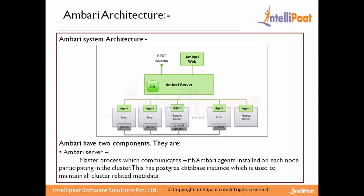The Ambari Server is installed on any node outside the cluster, from where it can access the entire cluster for installation and configuration. Ambari sends a heartbeat to servers to indicate that a node is available for performing tasks. The Ambari Agent runs on the nodes and performs different operations and tasks as ordered by the Ambari Server. Ambari also collects different metrics from the nodes, including cluster details and hardware details like RAM and disk space utilization.